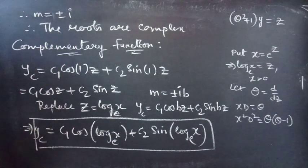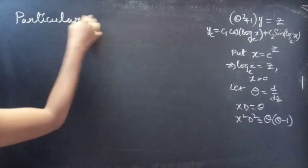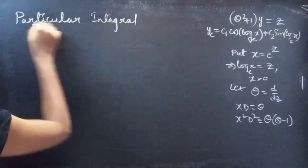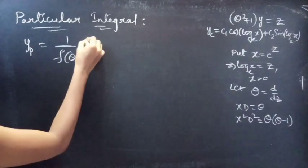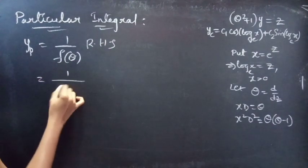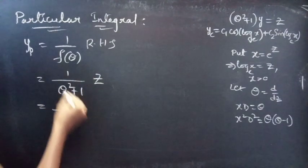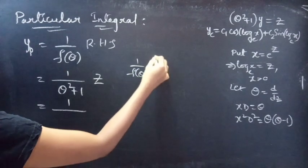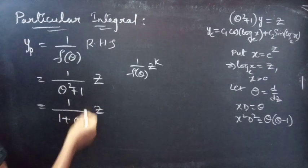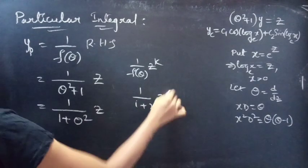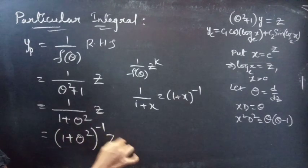Now let's find yp. We find yp using 1/f(θ) applied to the RHS, which equals 1/(θ² + 1) into z. We write this as 1/(1 + θ²) into z, which is of the form 1/(1 + x) — so we can use the binomial expansion (1 + x)⁻¹ = 1 − x + x² − x³ + ...